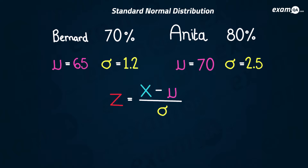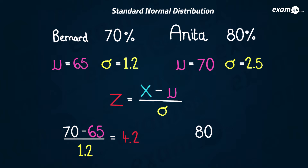Using the standardizing formula, we take Bernard's score of 70 as the x value, subtract the mean, and divide by the standard deviation of 1.2, which gives us 4.2. For Anita, we take her score, subtract the mean of 70, and divide by the standard deviation of 2.5, which gives us 4.